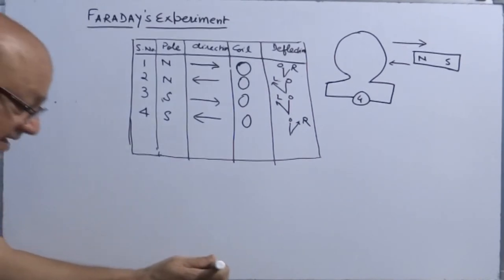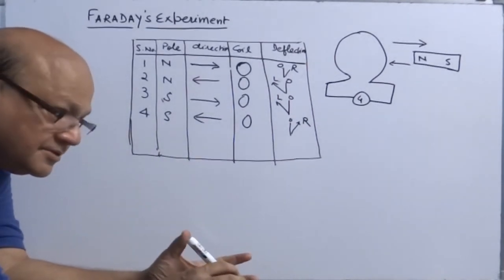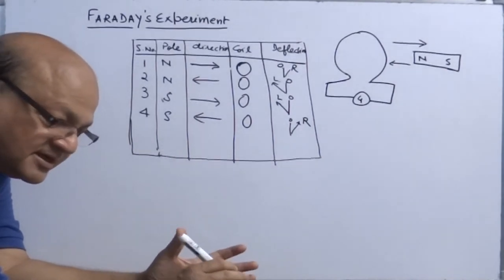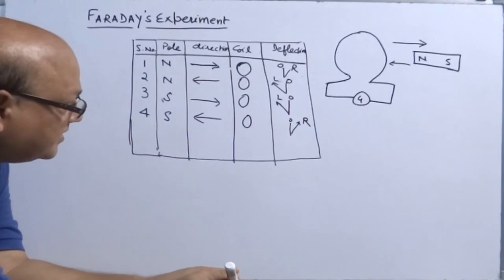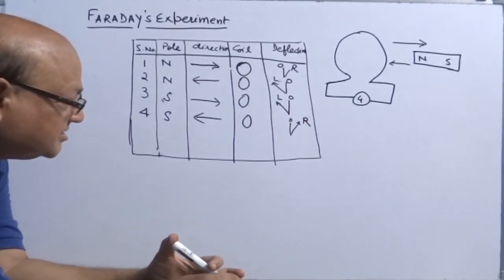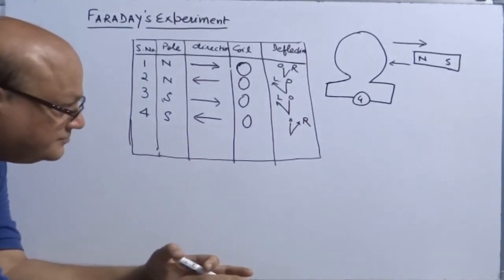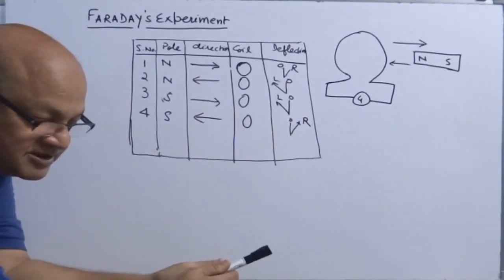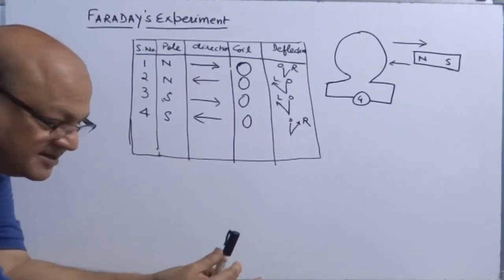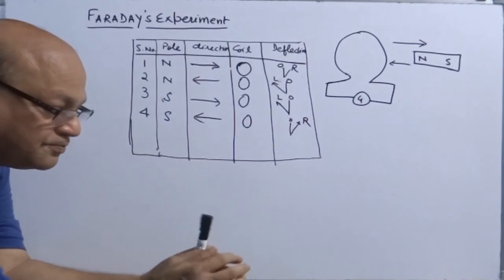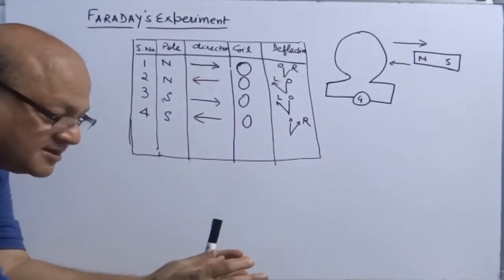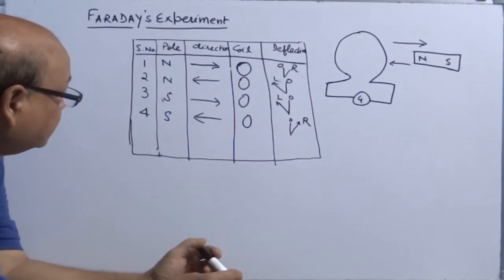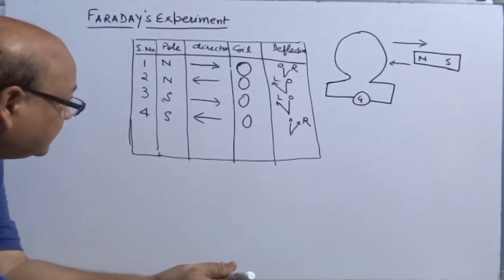Deflection in the galvanometer shows that there is a current in the circuit, and of course this current is induced — because there is no EMF source connected in the circuit, so no probability of current flowing. This phenomenon is actually termed as electromagnetic induction.